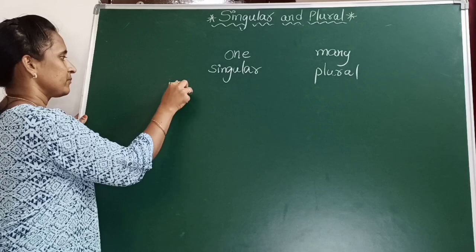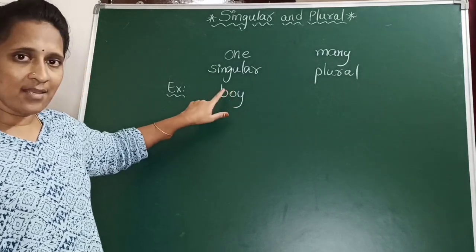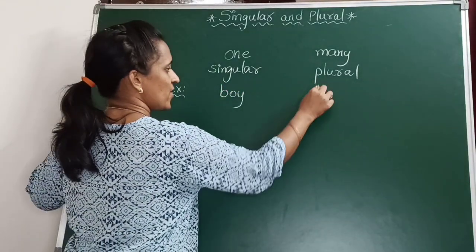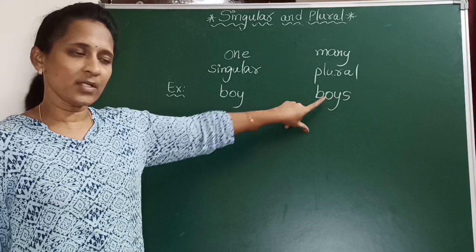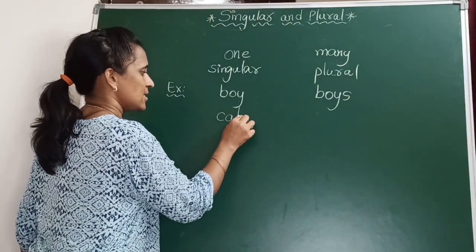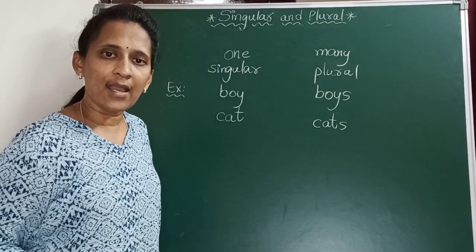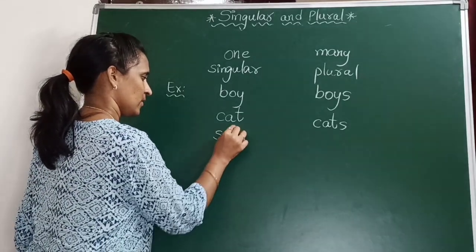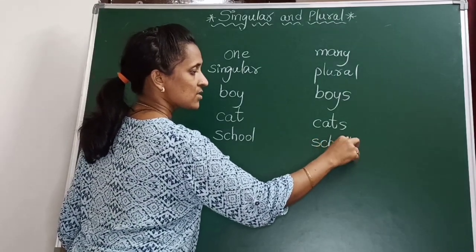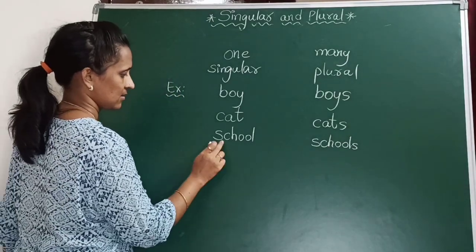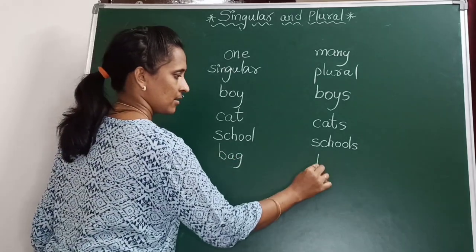For example, boy. Boy is singular. To change this word boy into plural, if we add S to that word, it will become a plural noun. Cat — if we add S to that, it will become plural: cats. School — schools. Bag — bags.